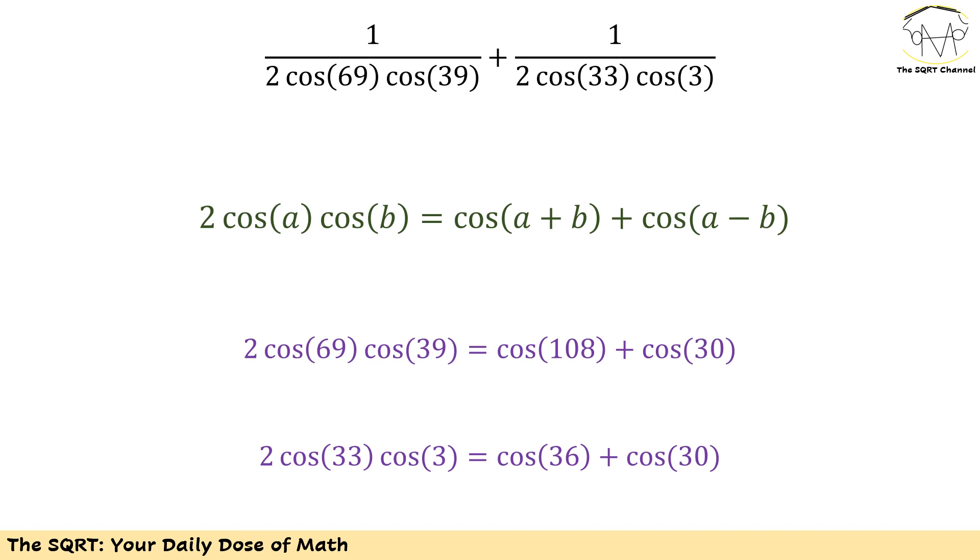Now we need to continue to simplify what we have here. Let's start with using an identity that you see here in green: 2 cos a times cos b can be written as cos(a + b) + cos(a - b). Here we have 69 and 39, I'm going to write it as cos 108 + cos 30. For cos 33 and cos 3, I'm going to replace that with cos 36 + cos 30.